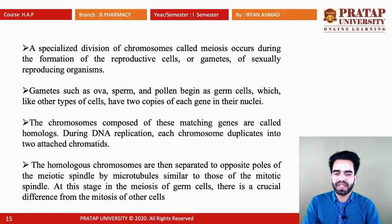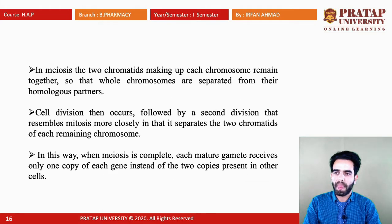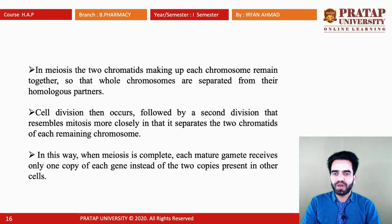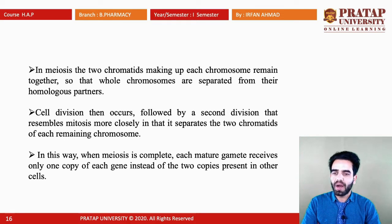There is a crucial difference between meiosis of germ cells and mitosis of other cells. In meiosis, the two chromatids making up a chromosome remain together, so that whole chromosomes are separated from their homologous partners. Then a second cell division occurs, which resembles mitosis, because meiosis II separates the chromatids of each remaining chromosome — that is why meiosis II is similar to mitosis.